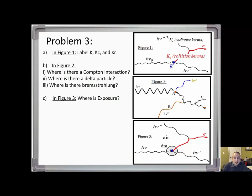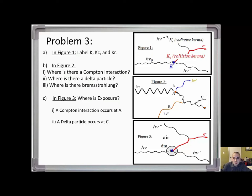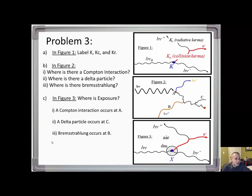In figure two, the Compton interaction takes place at point A — a photon comes in. A delta particle occurs at location C. Bremsstrahlung occurs at point B. In figure three, the exposure occurs at the blue location — that's where the exposure is.